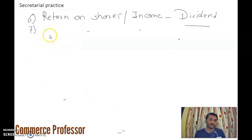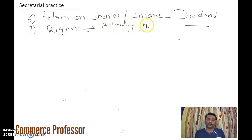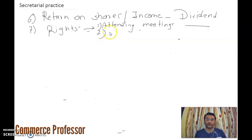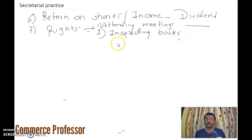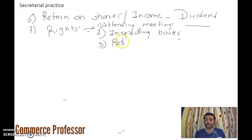The seventh feature is about the rights of shareholders. The first right is attending meetings. The second right is inspecting books of accounts, also called statutory books. They also have voting rights during the meeting, and the right to get a return on shares in the form of dividend.